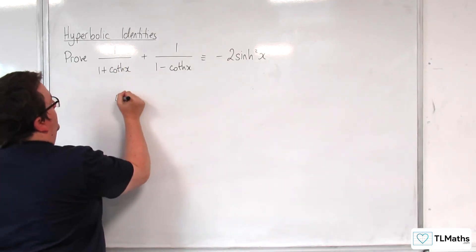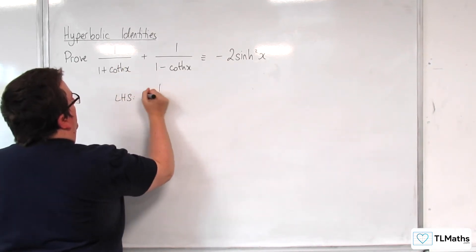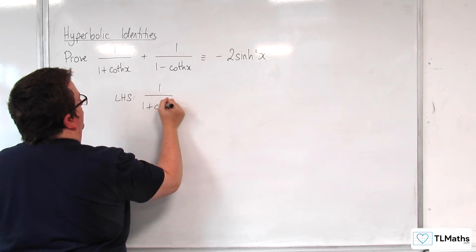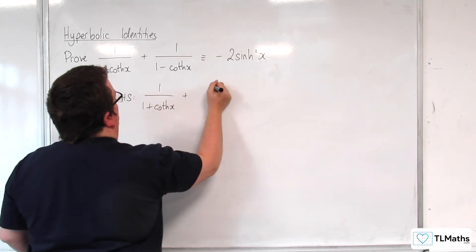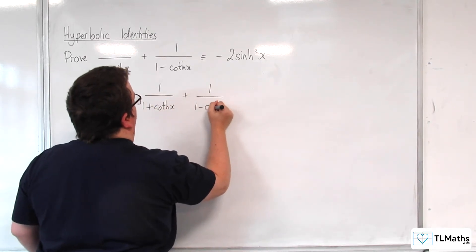So I'm going to start with the left hand side: 1 over 1 plus coth of x plus 1 over 1 minus coth of x.